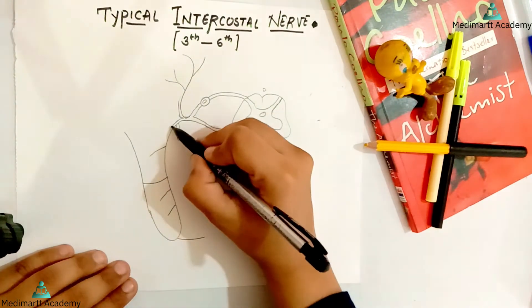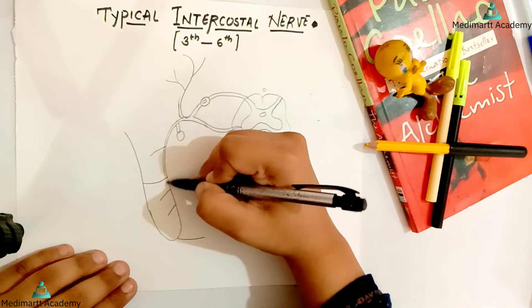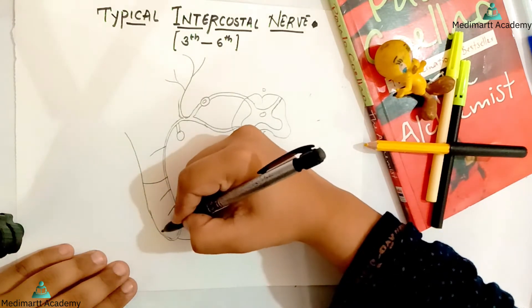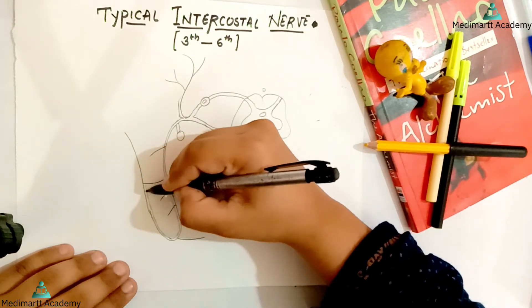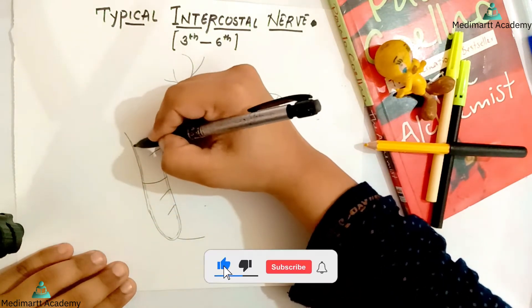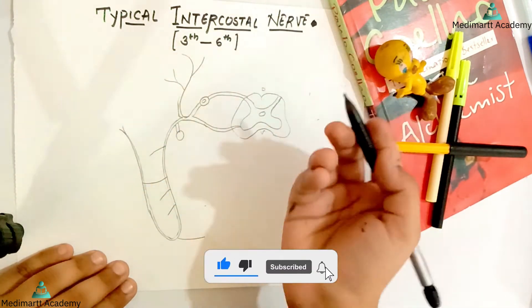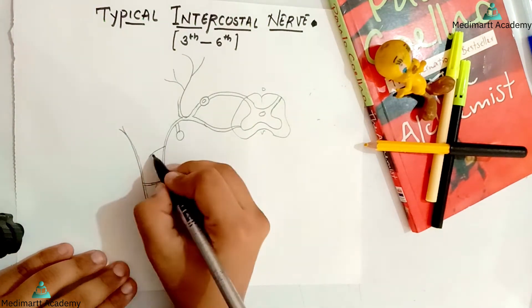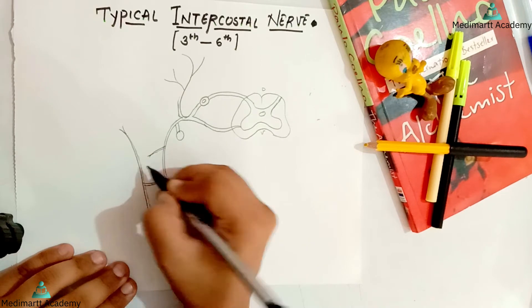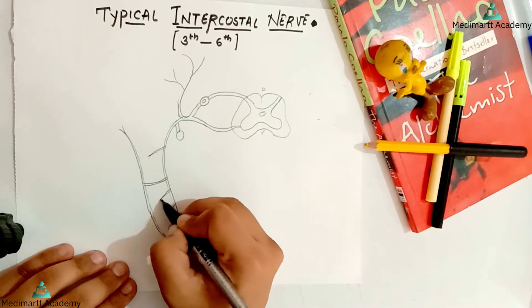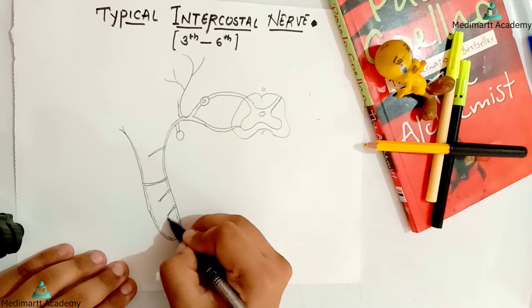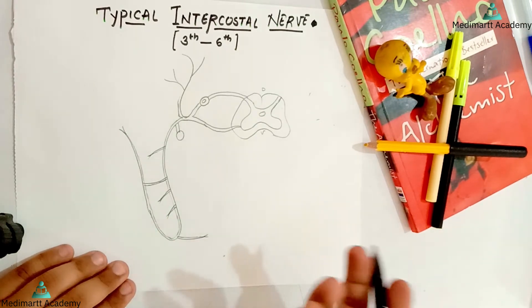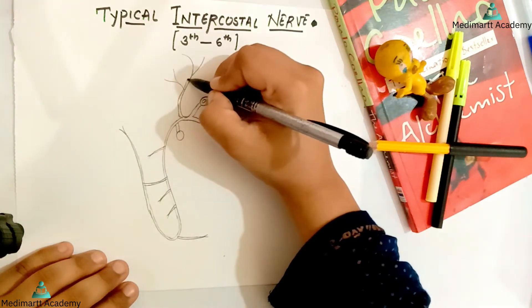Now I will double-line this. In the exam, if you draw this, it is going to be very easy. First draw a basic outline and then do the double-lining — a basic outline is very necessary for any diagram. You have to fill in yellow color here as well. Now for the dorsal ramus, we continue the outline.